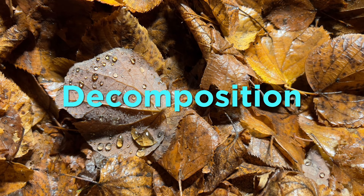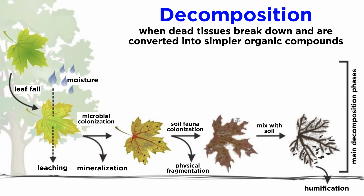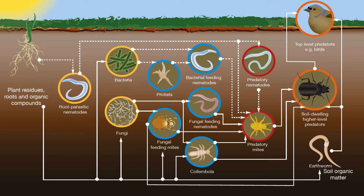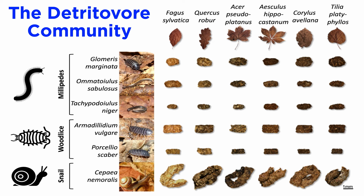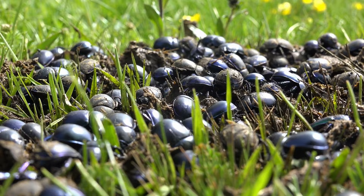Now a bit more on nutrient flow. Decomposition is the first stage in the recycling of nutrients that have been used by an organism, whether plant or animal, to build its body. It is the process whereby dead tissues break down and are converted into simpler organic compounds. These are the food source for many of the species at the base of ecosystems. The species that carry out the process of decomposition are known as detritivores. Many of these decomposer species function in tandem or parallel with one another, each responsible for a specific part of the decomposition process. Collectively they are known as the detritivore community.